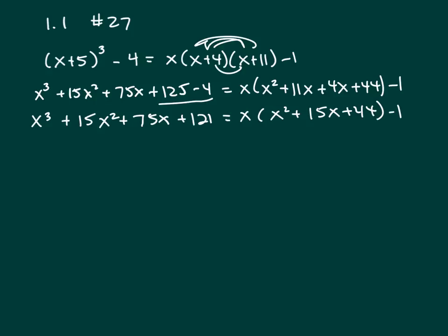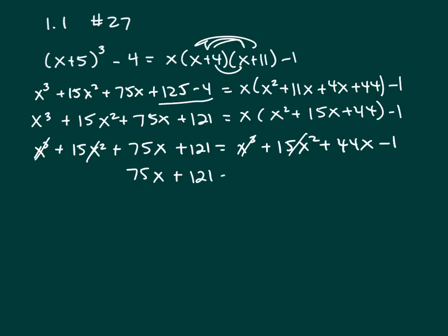So I've got x cubed plus 15x squared plus 75x plus 121 equal x cubed, I'm distributing the x, plus 15x squared plus 44x minus 1. So the x cubes fall out and the 15x squareds fall out. And you're left with 75x plus 121 equals 44x minus 1.